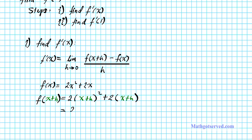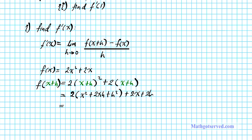Now let's expand this. Expanding (x plus h) squared gives x squared plus 2xh plus h squared, and distributing 2 to (x plus h) gives x plus h. Distributing the 2 outside to the expanded quantity yields 2x squared plus 4xh plus 2h squared plus 2x plus 2h. So this is f of x plus h.